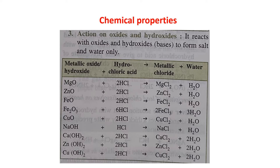Action on oxides and hydroxides: HCl reacts with oxides and hydroxides (which are bases) in neutralization reactions to form salt and water. For example: MgO + 2HCl → MgCl₂ + H₂O; Fe₂O₃ + 6HCl → 2FeCl₃ + 3H₂O (note the coefficient 6); NaOH + HCl → NaCl + H₂O; and Cu(OH)₂ + 2HCl → CuCl₂ + H₂O.